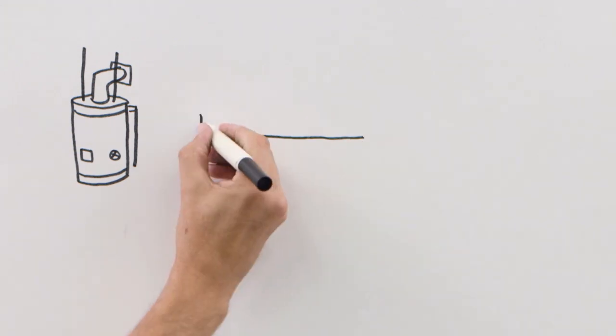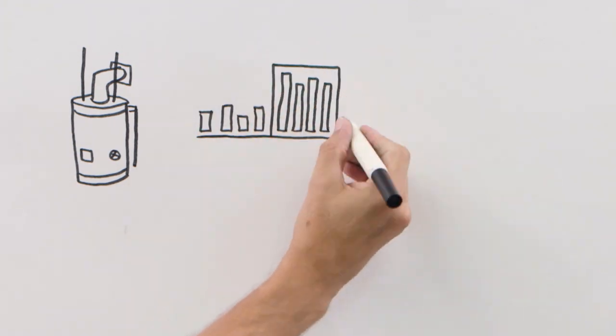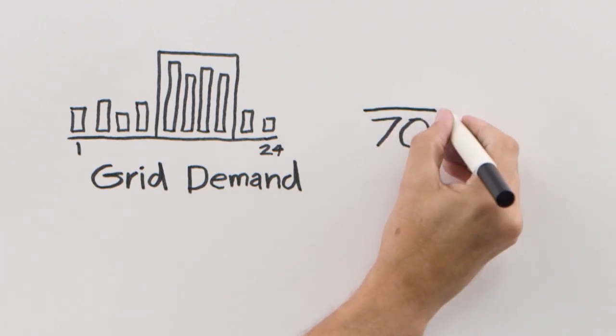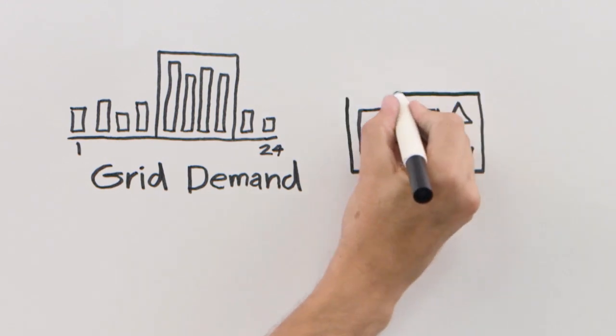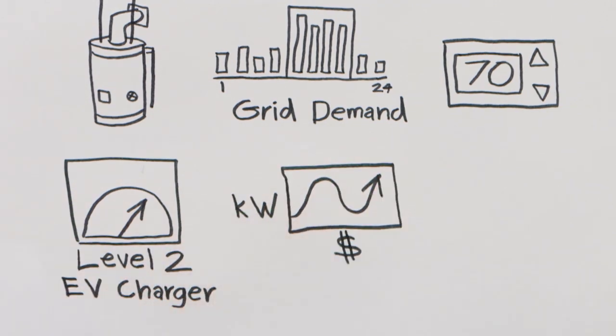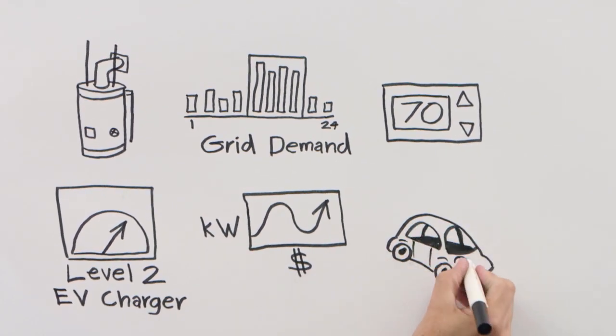Smart water heaters that work hardest when electricity demand or prices are low, thermostats that enable network operators to reduce peak demand and operate distribution assets more efficiently, and customer-owned chargers that fuel electric vehicles with the capability to shift charging to times of excess generation capacity.